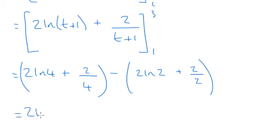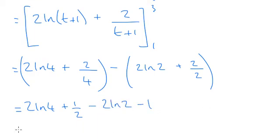That gives us 2 ln 4 plus a half, minus 2 ln 2, minus 1, which simplifies to 2 ln 4 minus 2 ln 2 minus a half.